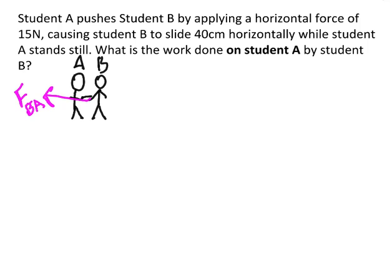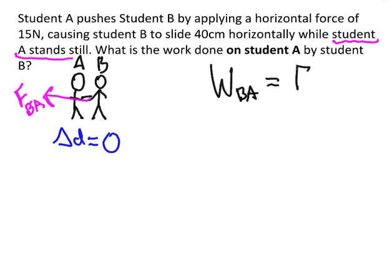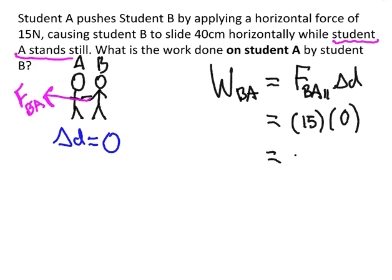Let's see how much work that does. The interesting thing here is that student A is actually standing still. So the displacement of student A is 0. What you're looking for in the displacement part of your work equation is the displacement of the object that's feeling the work. So if I try to calculate the work done by B on A, I'd take that force B on A parallel and multiply by the displacement — but even though that force is still 15 newtons, the displacement is 0. So the work done on student A by student B will be 0 simply because the person didn't go anywhere.